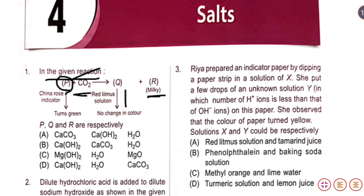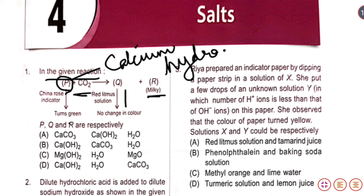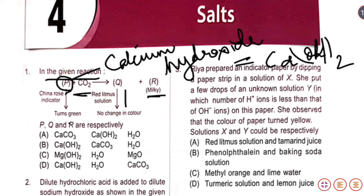P has converted the China rose indicator to green, so it is possible that P is basic in nature. What chemical can be basic in nature here? It could be calcium hydroxide — Ca(OH)2. This is how we write calcium hydroxide. So that is what P could be, and this is option number D.